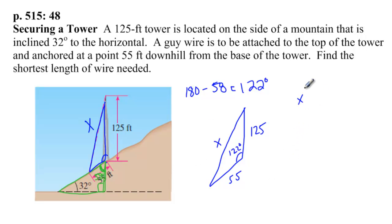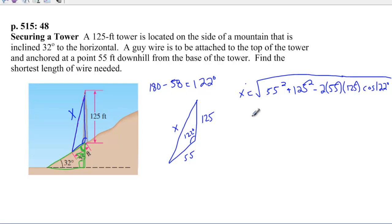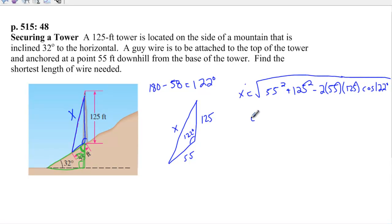The side opposite the angle given is going to be equal to the square root of 55 squared plus 125 squared minus 2 times 55 times 125 times the cosine of 122. If I plug that into my calculator and type all that in, I get 161.0477. So x is going to be 161.05 feet.